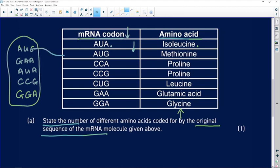Do we find an AUG? We do indeed. It codes for methionine. There's one. Now, GAA, here it is. It codes for glutamic acid, which is different to methionine. So there's our second one. AUA codes for isoleucine, which is different to methionine and glutamic acid. So that's our third amino acid.